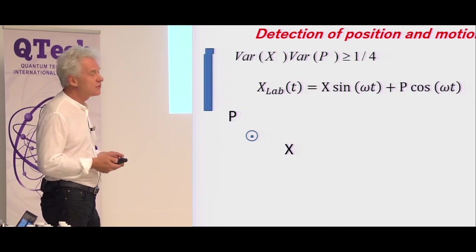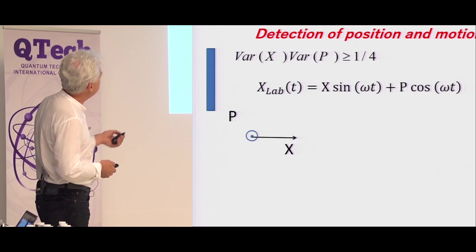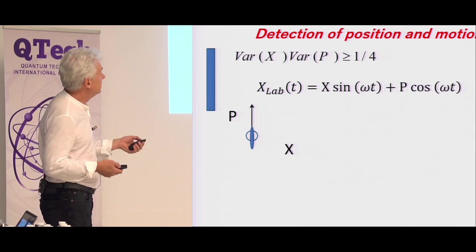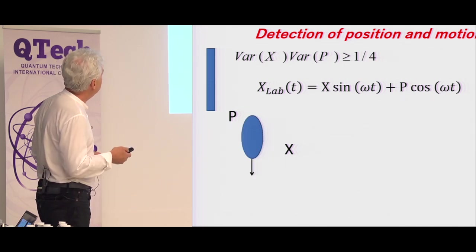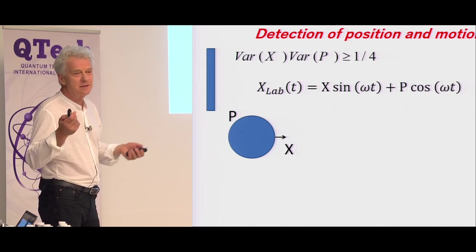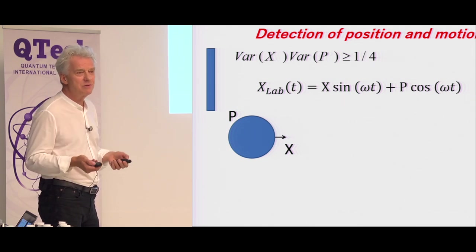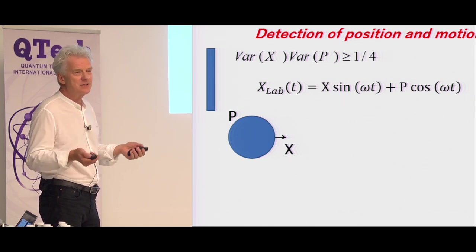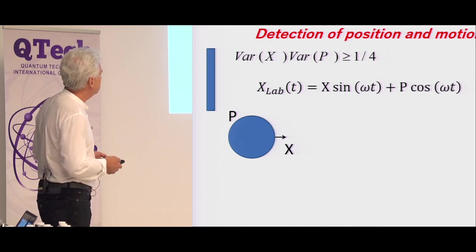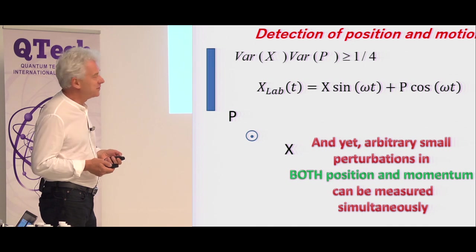Then this position in the lab frame is written through the noncommuting variables x and p. If you're trying to measure this position by reflecting light from it, then in phase space you first measure x but you put the back action in p. Then a quarter period later you measure p. And you keep going. The more you measure, the more you disturb. This is this balance between the measurement precision and disturbance.